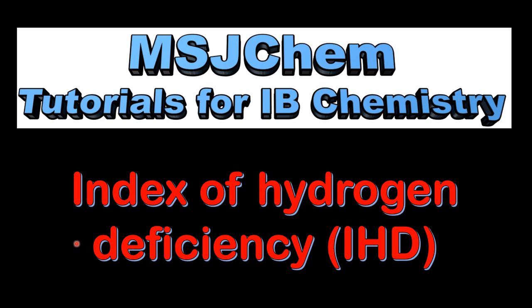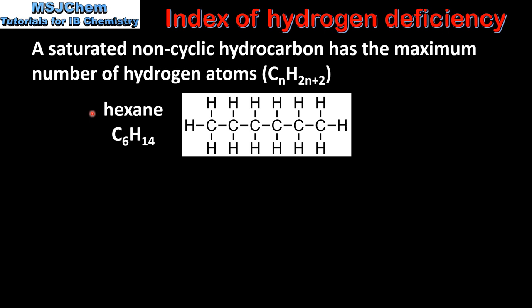A saturated non-cyclic hydrocarbon such as hexane has the maximum number of hydrogen atoms. Hexane is an alkane with the general formula CnH2n+2. Its molecular formula is C6H14, which means it has 6 carbon atoms and 14 hydrogen atoms.